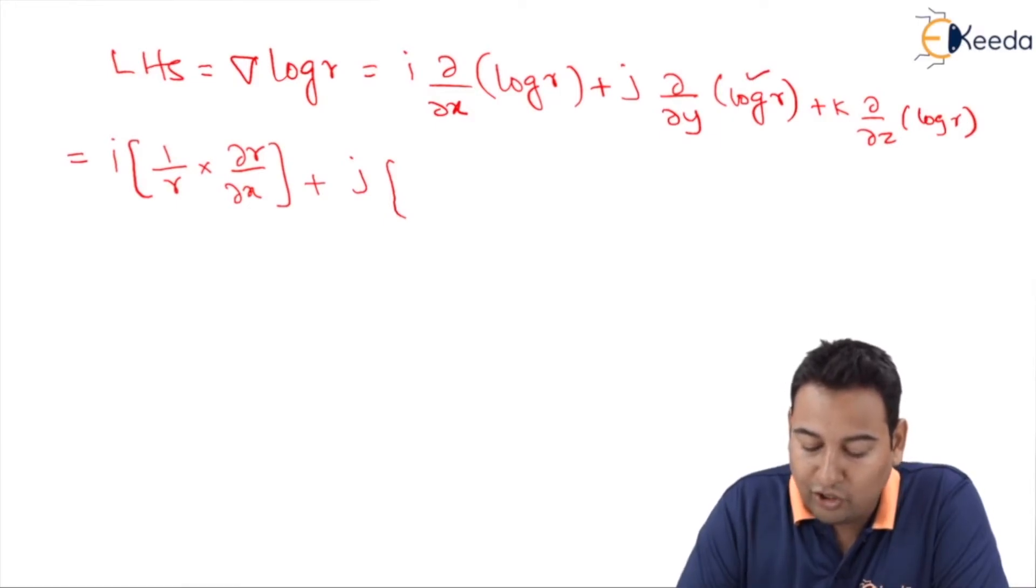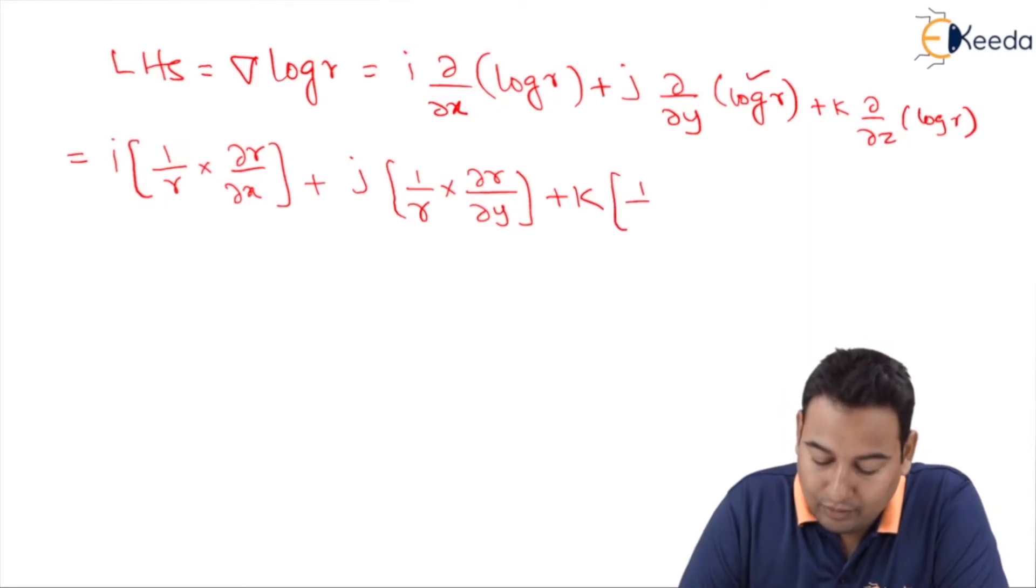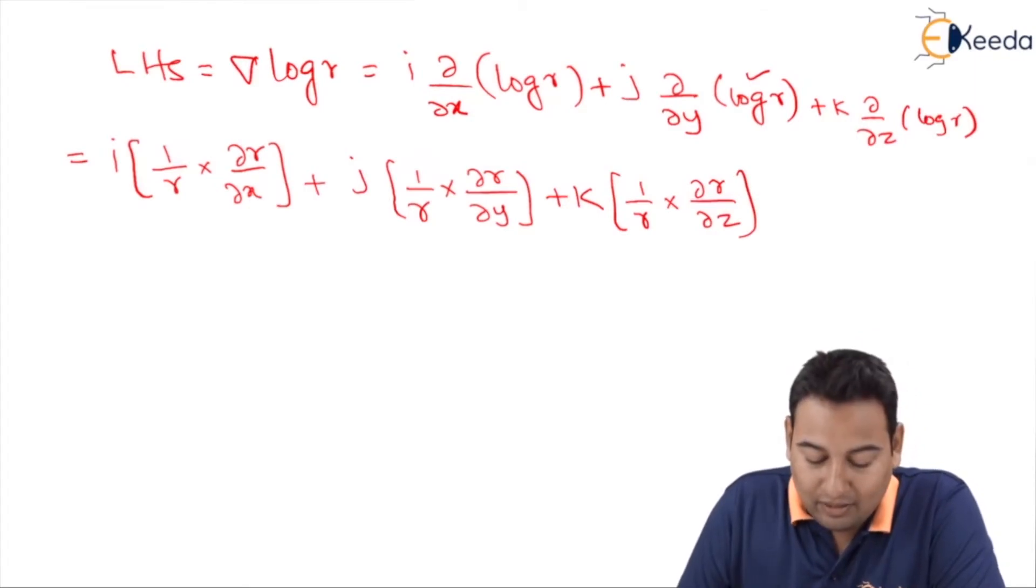Again, you are going to differentiate log r with respect to y, therefore 1 upon r into dou r upon dou y. And what is last? k: 1 upon r dou r by dou z. Let's replace dou r by dou x, dou r by dou y, and dou r by dou z from here.